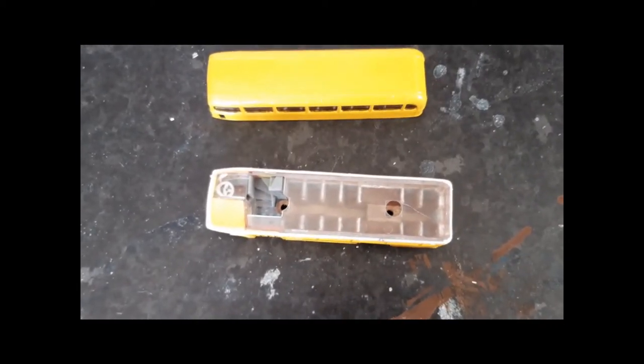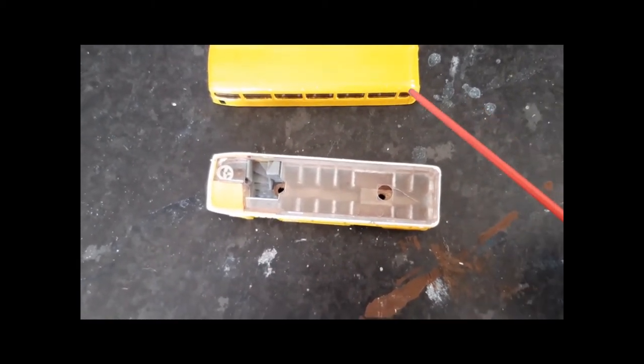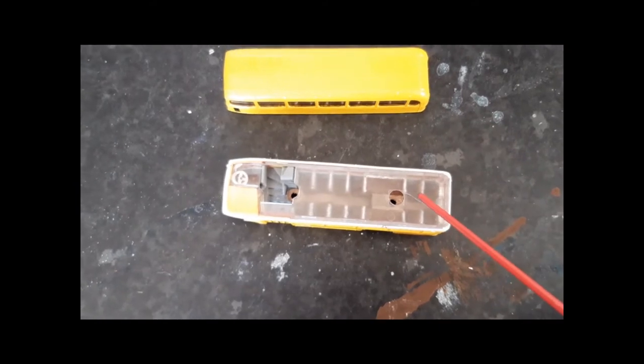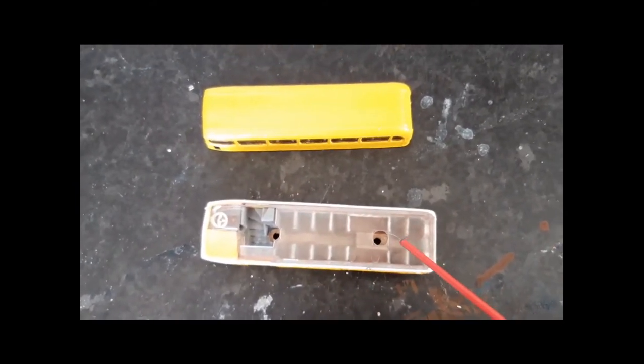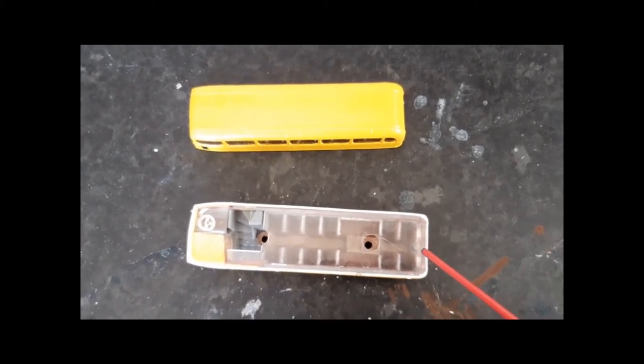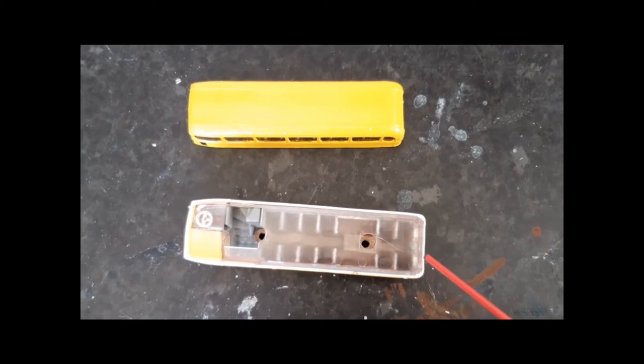The other issue with superglue is that by the time you've applied it all the way around the edge, got your top deck, joined them together and made sure that everything is a neat fit, that superglue might have dried before the process is complete. And that's obviously not ideal.